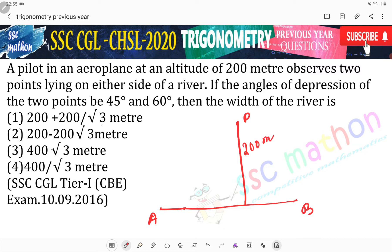Now look. One side - the problem says observe two points lying on either side of a river. If the angle of depression of the two points - so one side of the river sir? One side? No sir, both sides. So one is 45 degree angle of depression, the other is 60 degree.